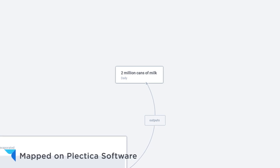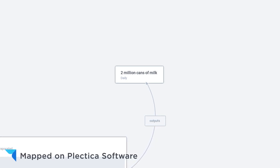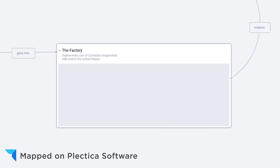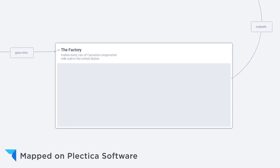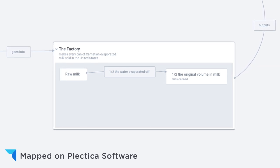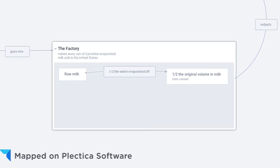Here's how the factory works. They make two million cans of milk a day. To do that, they take in 400,000 gallons of raw milk. Wait for it. Here's the complicated process for making evaporated milk: They evaporate half the water out and they can what's left. That's it. That's the process.